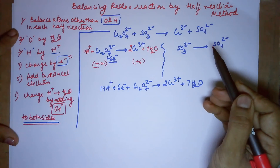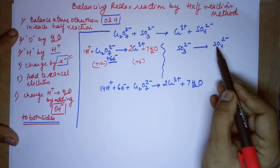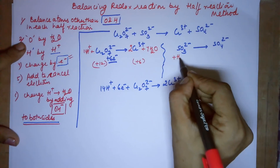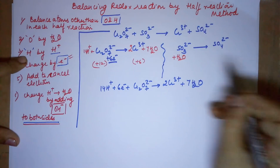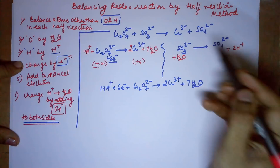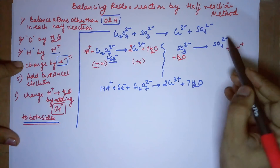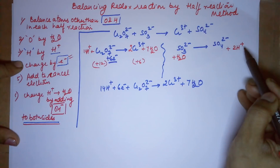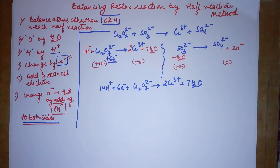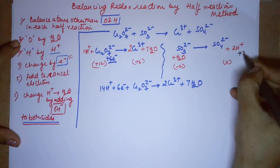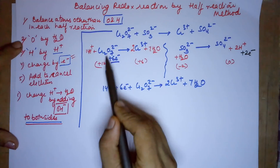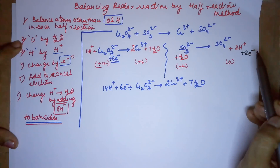For the second half reaction, step one: balance sulfur — one sulfur on each side, no change needed. Balance oxygen by water: three oxygens in sulfite, four in sulfate, so add one water molecule on the left. Balance hydrogen with H⁺: two hydrogens from water, so add 2 H⁺ on the right. For charge balance: left side is 2⁻, right side has 2⁻ plus 2⁺ making zero charge, so add 2 electrons to the right side. As noted, electrons are on the product side here.